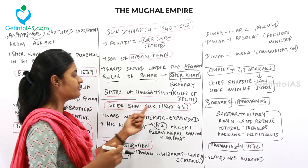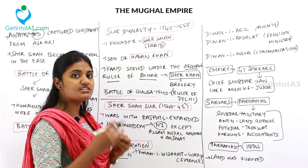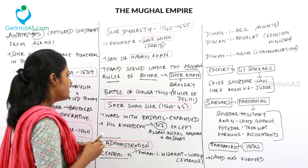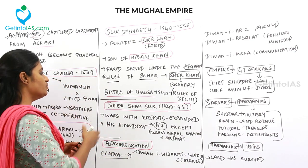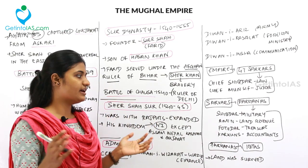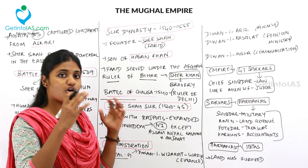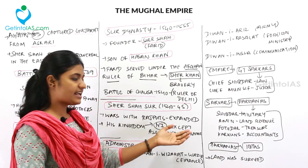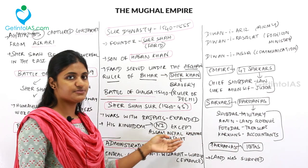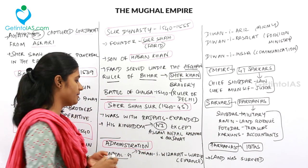Sher Shah's rule lasted from 1540 to 1545 — only five years, but very efficient. He started wars with the Rajputs and extended his empire across most of North India, except Assam, Nepal, Kashmir, and Gujarat.